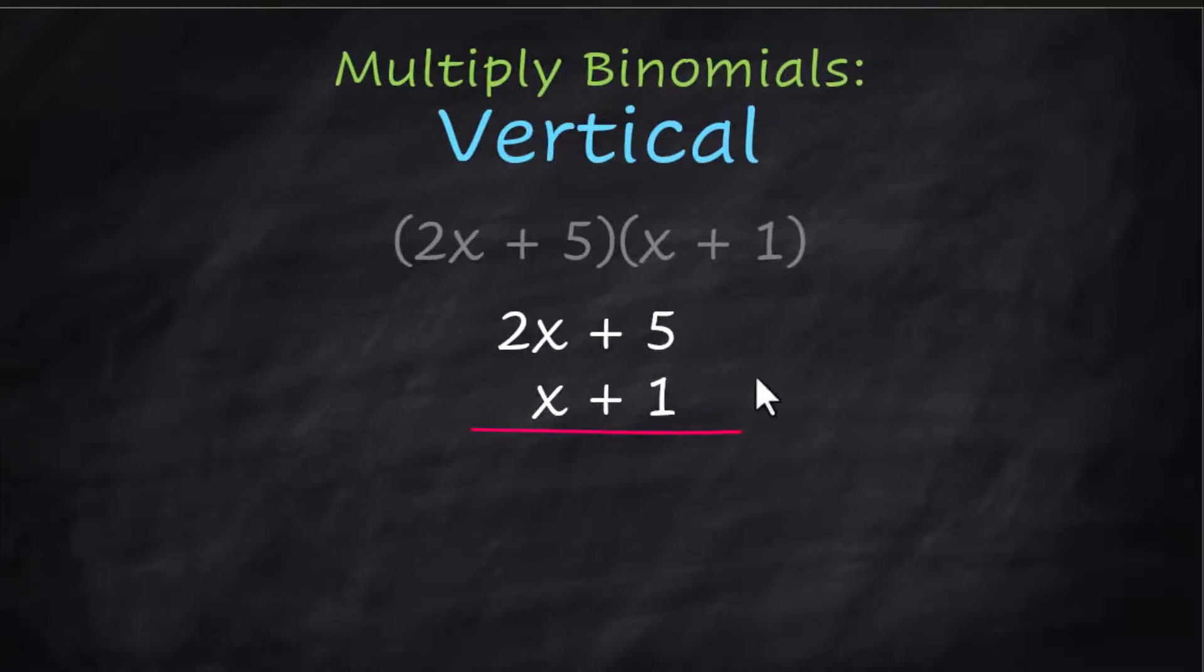Okay, once they're vertical, first thing you do is multiply the 1 times the 5, and that is a positive 5, because those are both positive numbers. Multiply the 1 times the 2x. So now we're going to multiply x times 5. x times positive 5 is 5x, and line that up underneath the 2x, and you know that's positive.